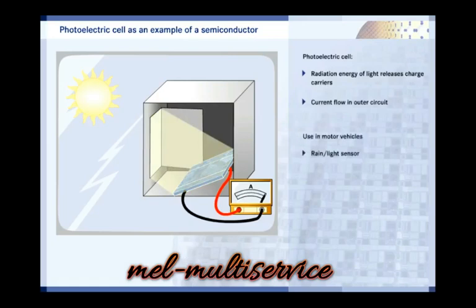Electric current can be measured at the metal contacts of the photoelectric cell. Very similar elements can be found in the rain, light sensors fitted in many cars.